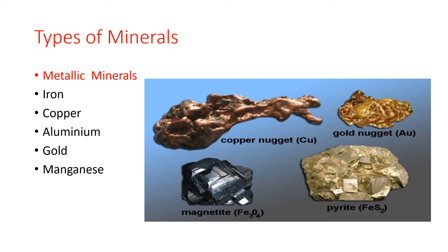Next, Aluminium. Aluminium is a light metal. It is extracted from bauxite. Reserves of bauxite are found in Jharkhand. It does not rust. Therefore, it is used to make bodies of aircrafts and cars. Aluminium is mainly found in Odisha, Gujarat, Maharashtra and Tamil Nadu.